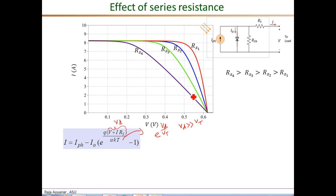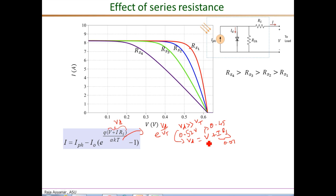So if the voltage at which the current begins to drop rapidly is about 0.52 volts, then because of the resistive drop I times RS — where V_D equals V plus I times RS — even at V equals 0.45 volts, assuming the drop is 0.07 volts, the effect of the series resistance is to reduce the external voltage from 0.52 down to 0.45 at which the current begins to drop rapidly. At very large resistance values, it begins to drop rapidly even at 0.2 volts.